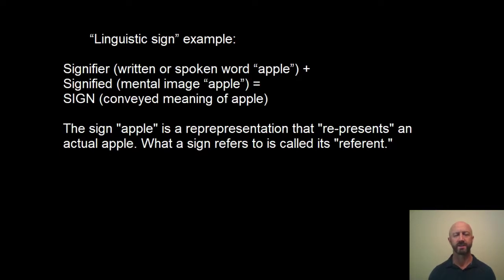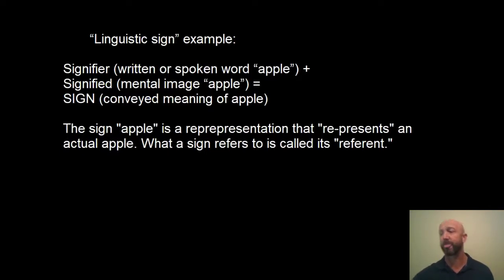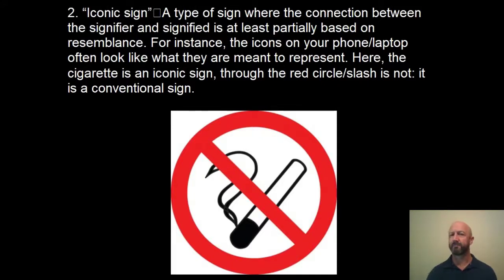There's another term in semiotics called a referent. The sign 'apple,' either written or heard, represents an actual apple. What that sign actually refers to out in the real world is what we call its referent. If I say 'this morning I ate an apple for breakfast,' the sign 'apple' refers to the actual apple I ate — that apple is the referent. Or if I say 'this glass of water is very cold,' the word 'water' is the sign and this glass is the referent; that sign represents this thing.